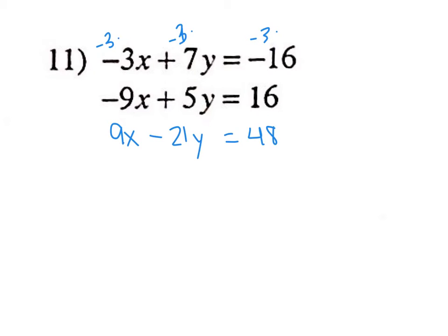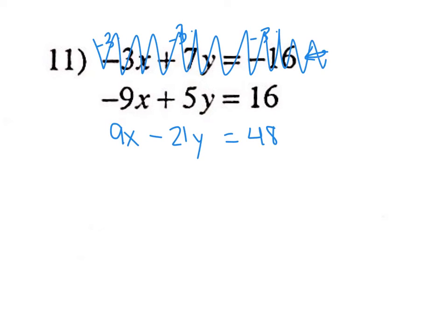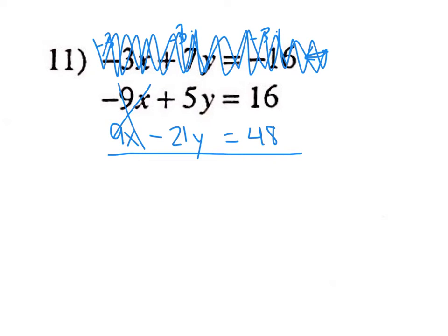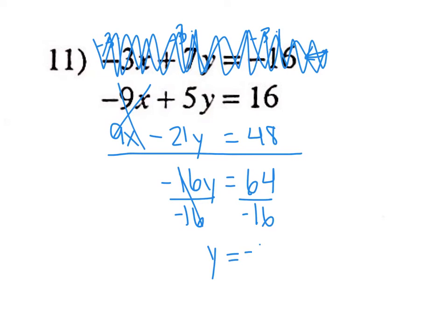So I write the new equation below. Negative 3 times negative 3 is positive 9x. Negative 3 times 7 is negative 21y. And negative 3 times negative 16 is positive 48. I've manipulated this equation so I no longer need it — I cross it out to avoid confusion about which equation I'm supposed to be adding. Now the x's cancel out. Adding straight down: 5 plus negative 21 is negative 16y, and 16 plus 48 is 64. Divide by negative 16: y equals negative 4.